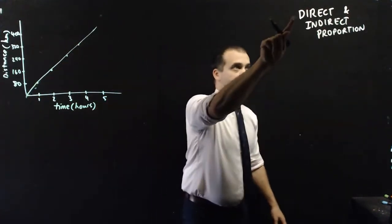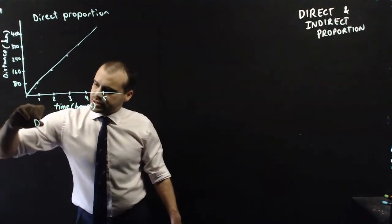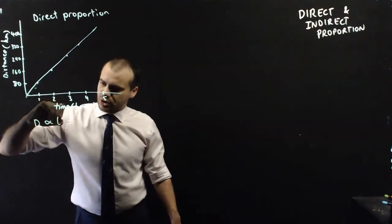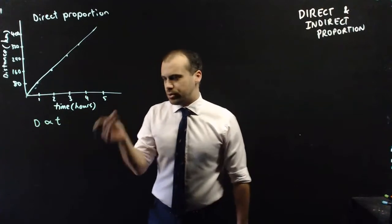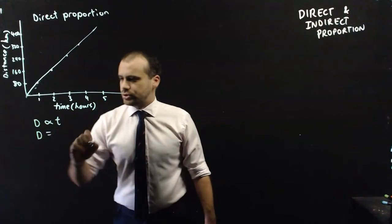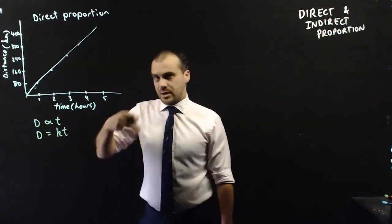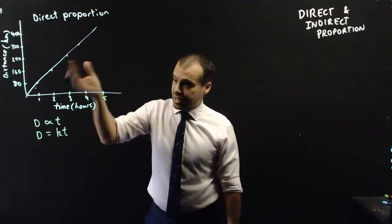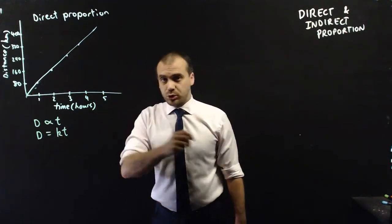This is an example of direct proportion. Now, mathematically, we can say that the distance traveled is directly proportional to the time that you've been traveling. Now, if two things are directly proportional, we know that the thing will be equal to kt. And k is some number that t is being multiplied by. In this particular case, the number 80. We call this k here the constant of proportionality.